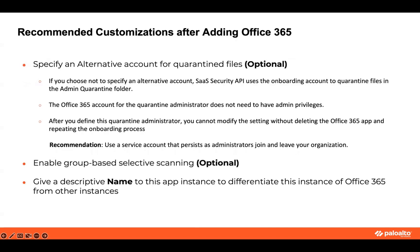There are some customizations that would be very helpful after adding Office 365. One is to set up a separate account for quarantine files. The recommendation is to use a service account that persists as administrators join and leave your organization. This quarantine administrator account does not need to have admin privileges. Note that after you define this account, you cannot modify the setting without deleting the Office 365 app and repeating the onboarding process. Also, if you don't specify an alternative account, SaaS Security API uses the onboarding account to quarantine files in the admin quarantine folder.